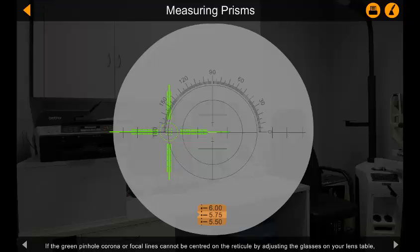If the green pinhole corona or focal lines cannot be centered on the reticule by adjusting the glasses on your lens table, then there is a prism present in the lens.